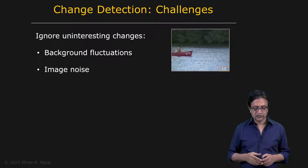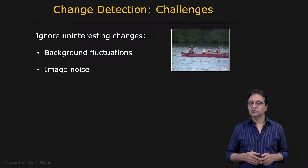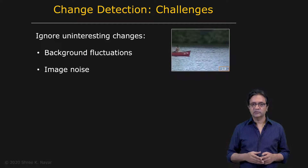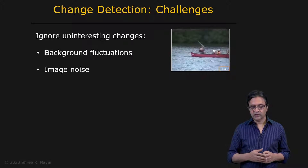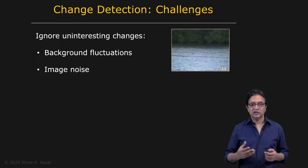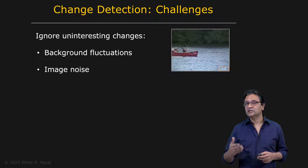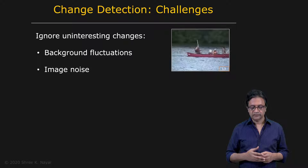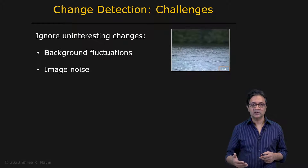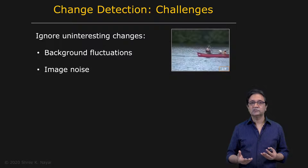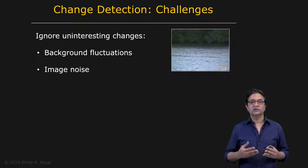We'll call them challenges. We want to be able to ignore uninteresting changes due to background fluctuations. For instance, in this example, you have a boat going by — that's an interesting, meaningful change — but you also have ripples on the water. On a sunny day, those ripples would cause fairly substantial changes at each pixel. We want our change detection algorithm to be insensitive to these fluctuations. And then, of course, there is noise — capturing a scene at night when light levels are low and noise is high can cause pixels to fluctuate rapidly.